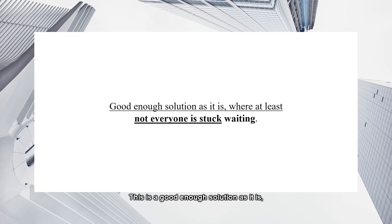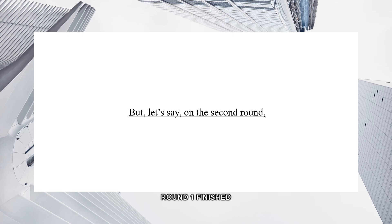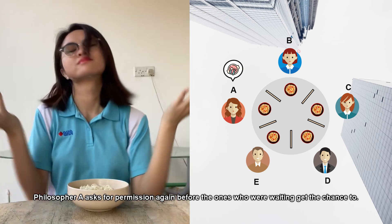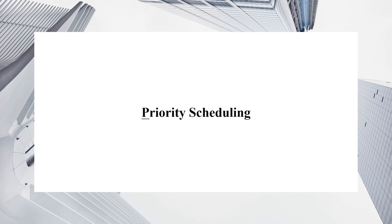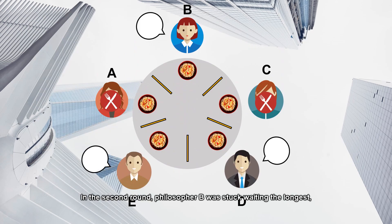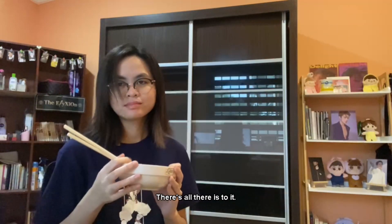This is a good enough solution as it is, where at least not everyone's stuck waiting. But let's say on the second round, philosopher A asks for permission again before the ones who were waiting earlier get the chance to. It's not fair, isn't it? How about we add priority scheduling too? Priority scheduling can be set by the amount of time spent waiting to eat. The longer the time spent waiting, the higher the priority. In the second round, philosopher B was stuck waiting the longest, so he gets to try first, then C, then D, so on and so forth.